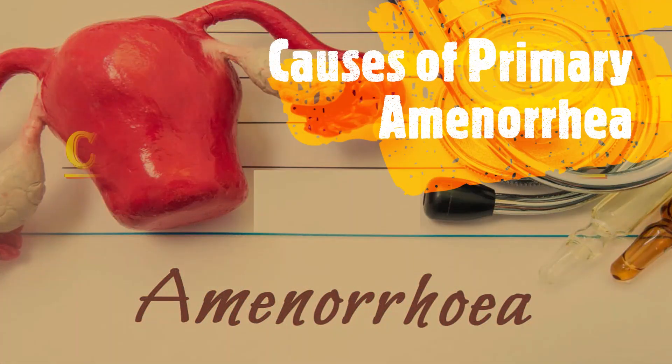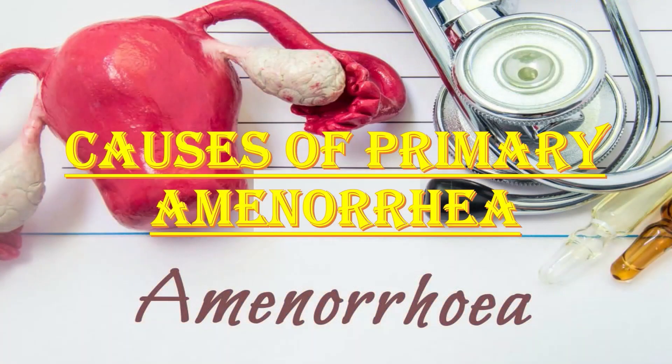Bismillahirrahmanirrahim. Today the topic of our discussion is the causes of primary amenorrhea, which is defined as the absence of menses at age 15 years in the presence or absence of normal growth and secondary sexual characteristics. For this topic, I would recommend Arshad Chauhan's book of Obstetrics and Gynecology.